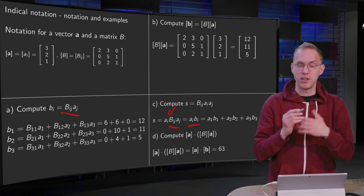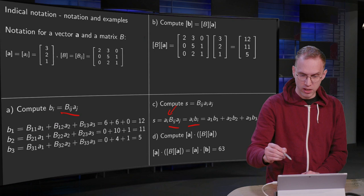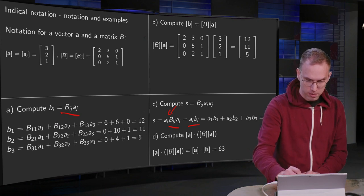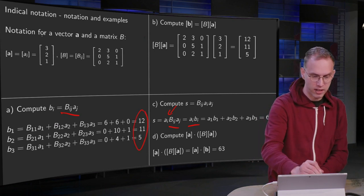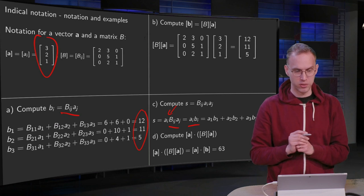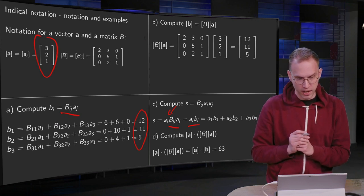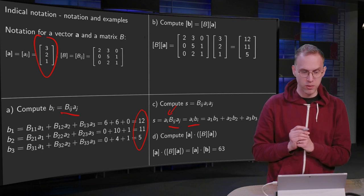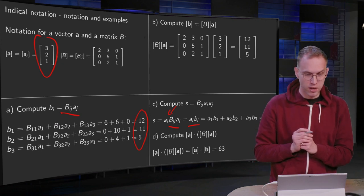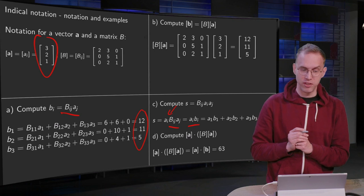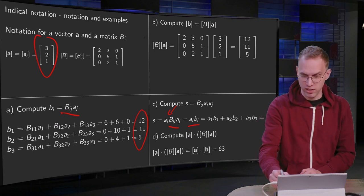So what's left? You have to compute ai bi. Here you have the b1, b2, b3, and here the a1, a2, a3. So what do you get? a1 b1 equals 36 plus a2 b2 equals 22. That's together 58 plus a3 b3 equals 5. So add 5 more and you get 63.